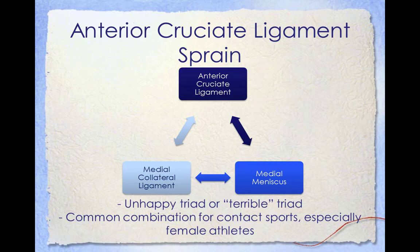An unhappy triad, or terrible triad, is a complete or partial tear of the anterior cruciate ligament, medial collateral ligament, and medial meniscus resulting from one single knee injury. Originally, the unhappy triad included the medial meniscus, but more recent research indicates that the classic unhappy triad is actually an unusual clinical entity among athletes, and that lateral meniscus tears are more common than medial meniscus tears in conjunction with ACL sprains.